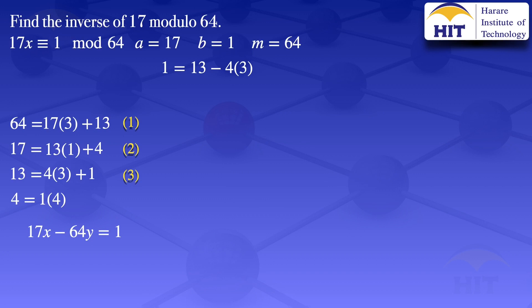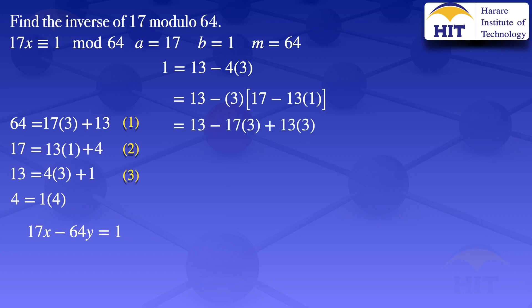From equation number 2, we see that 4 equals 17 minus 13 times 1. Substituting where we have the 4, we put 17 minus 13 times 1. Our equation becomes 13 minus 3 times (17 minus 13 times 1). Multiplying through by 3, we have 13 minus 17 times 3 plus 13 times 3. We have one 13 and we add 3 thirteens, giving us 4 thirteens. So the result is 13 times 4 minus 17 times 3.